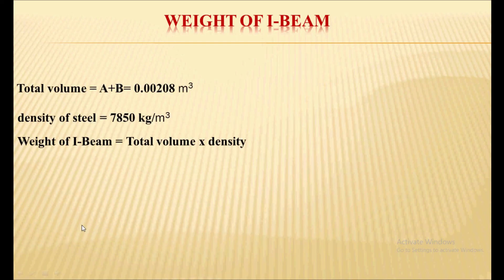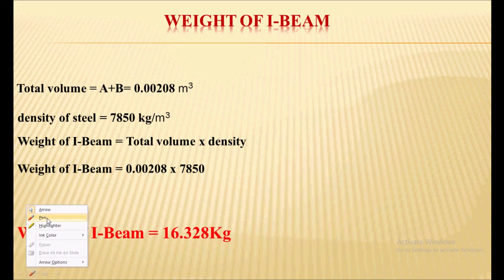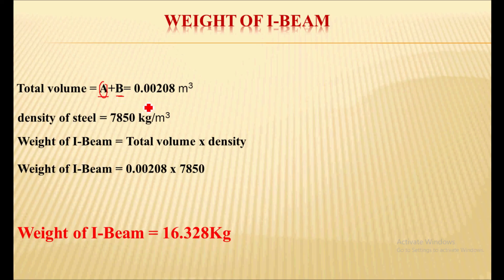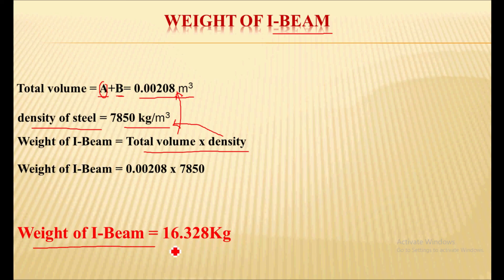Now we calculate the total volume: web volume plus two-flange volume = 0.00088 + 0.0012 = 0.00208 m³. The I-beam is made of structural steel, so density of steel is 7850 kg/m³. Weight of I-beam = total volume × density = 0.00208 × 7850 = 16.328 kg. This is the weight per meter for the beam.